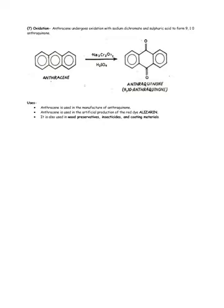Oxidation: anthracene undergoes oxidation with sodium dichromate and sulfuric acid to form 9,10-anthraquinone, also known as anthraquinone or 9,10-anthracenedione. Anthracene is used in the manufacture of anthraquinone, in the artificial production of the red dye alizarin, and in wood preservatives, insecticides, and coating materials.